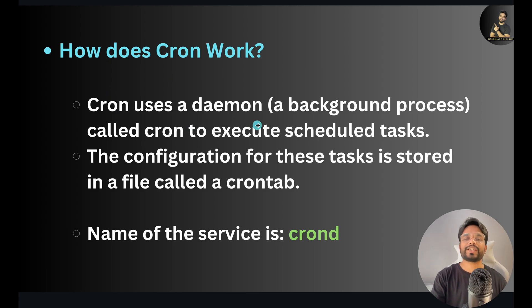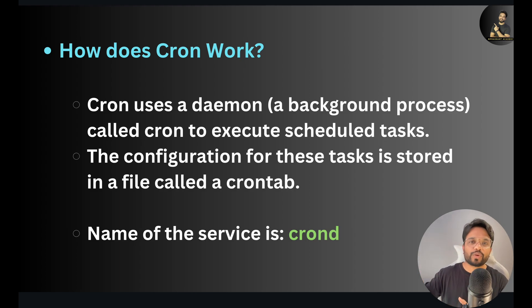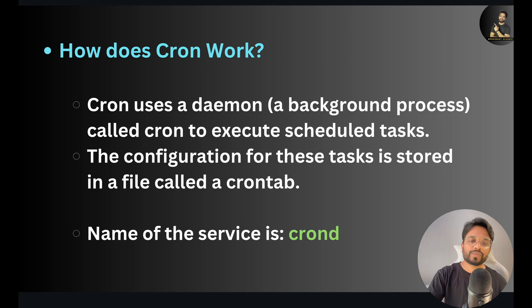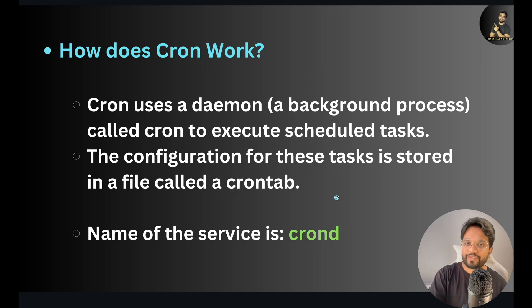Cron uses a daemon — a background process called 'cron' — which runs continuously all the time to execute scheduled tasks. It keeps checking if there is any task scheduled for the given time, and if yes, it executes that task. The configuration for these tasks is stored in a file called the crontab file. Let's see an example.